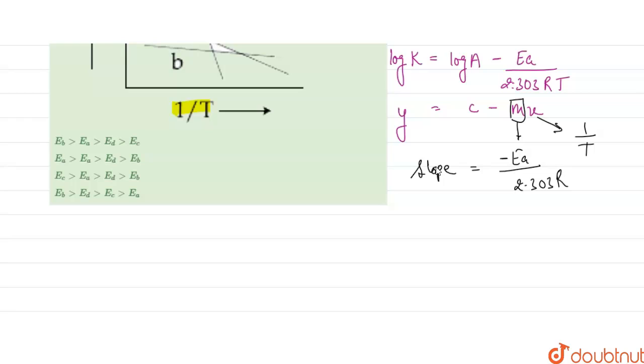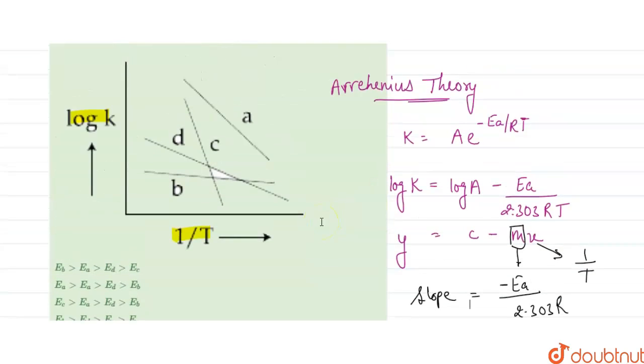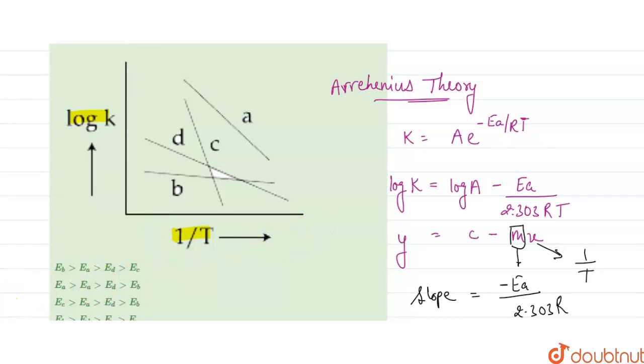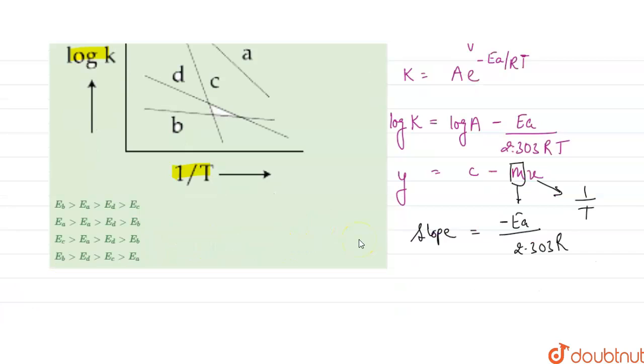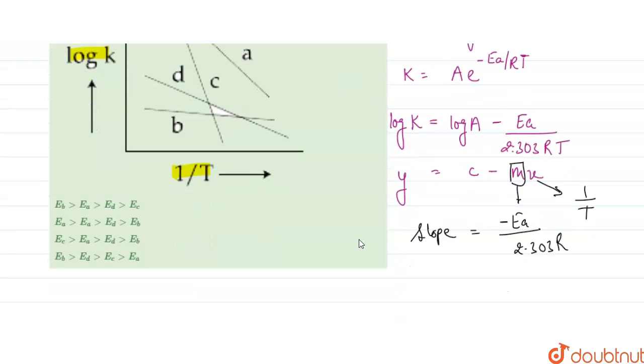Now if we see on the graph, the slope of B is very low. If we look in the graph, the slope of C will be low. So the activation energy of C will be high. So Ec.